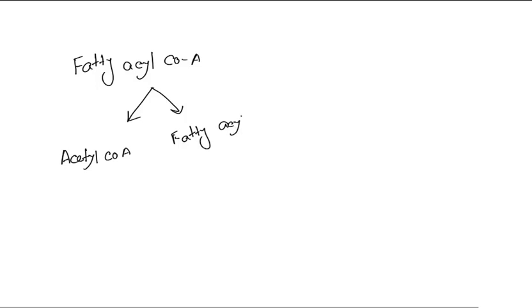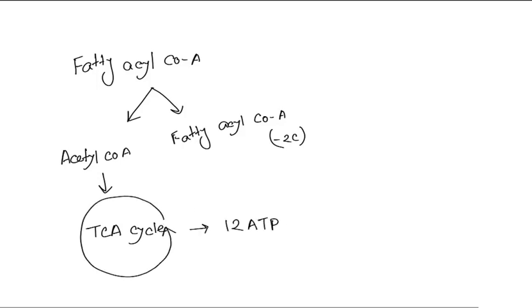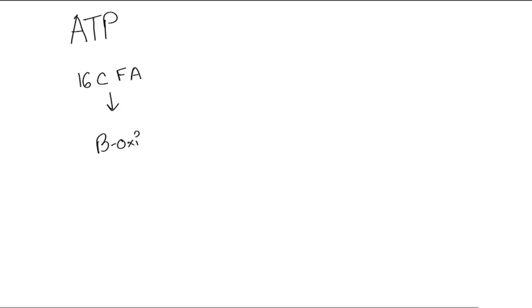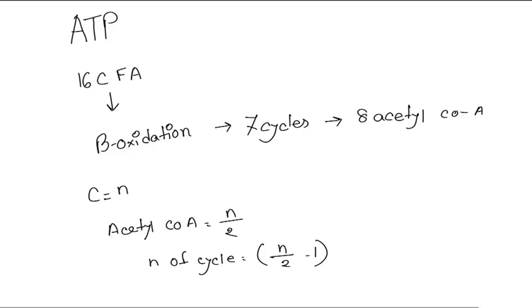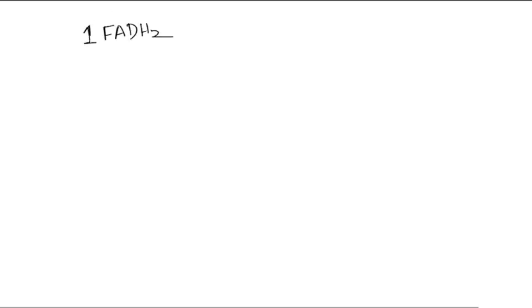In the TCA cycle, one molecule of acetyl-CoA will produce 12 ATP, which we will discuss in a separate video. The fatty acyl-CoA will repeat the same sequence of beta oxidation until all of it has turned into acetyl-CoA. Now let's see how much ATP is generated from beta oxidation. If a 16-carbon fatty acid enters into beta oxidation, it will go through seven cycles to be fully oxidized, and when completely oxidized it will produce eight acetyl-CoA. There is an easy trick: if the number of carbons is n (where n is an even number), the number of acetyl-CoA produced will be n/2, and the number of cycles will be n/2 minus 1. For example, if an 18-carbon fatty acid enters into beta oxidation, the number of cycles will be 18/2 minus 1, which is eight cycles, and the number of acetyl-CoA produced will be 18/2, which equals 9. We know that from each cycle, one FADH2 and one NADH2 is produced.